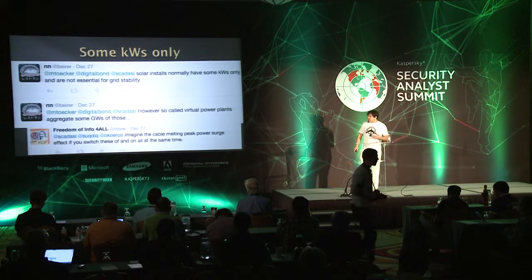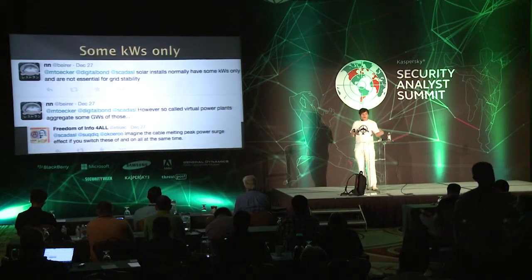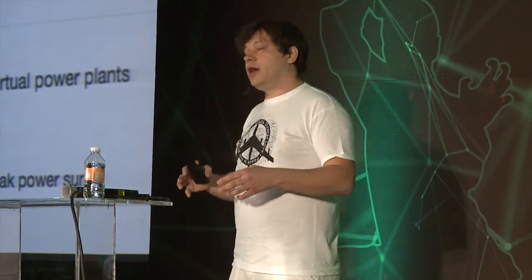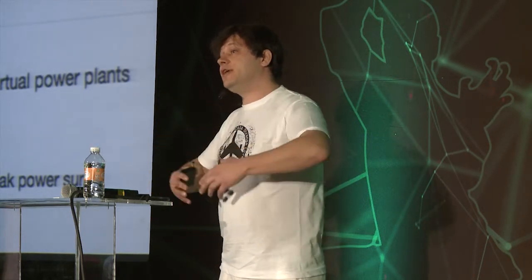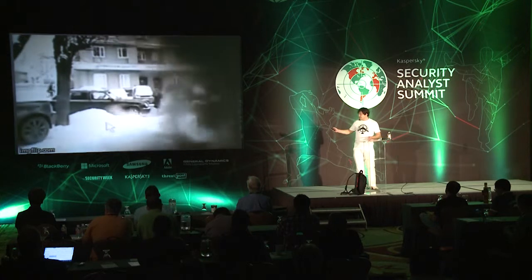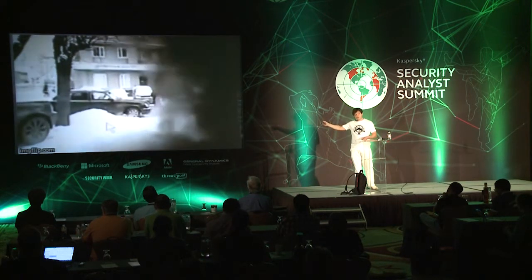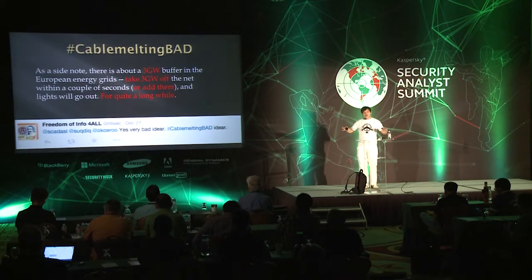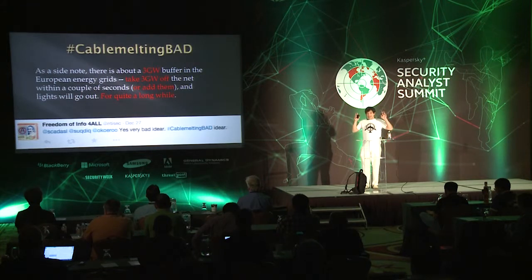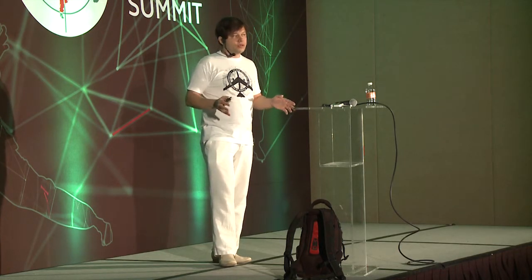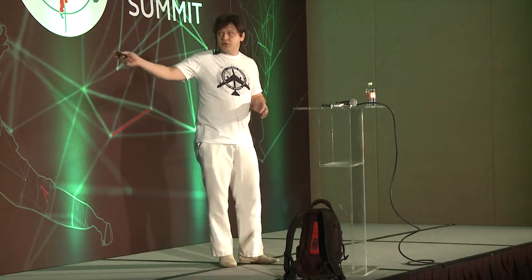Another interesting story. We got feedback: 'you know guys, all these solar systems are not big, they don't generate a lot of power.' But let's assume we can switch off or fool the system to tell the smart grid that it generates a lot of power. What do we get? We get the cable melting effect. According to feedback from German researchers, for all of Europe, if you manage to remove or add about 3 GW to the smart grid, you will have a big problem across all of Europe. And cable melting is bad.